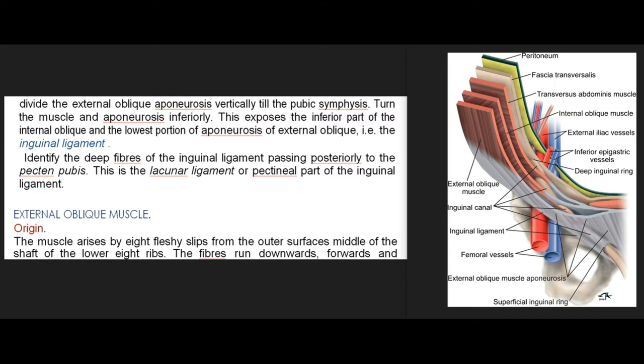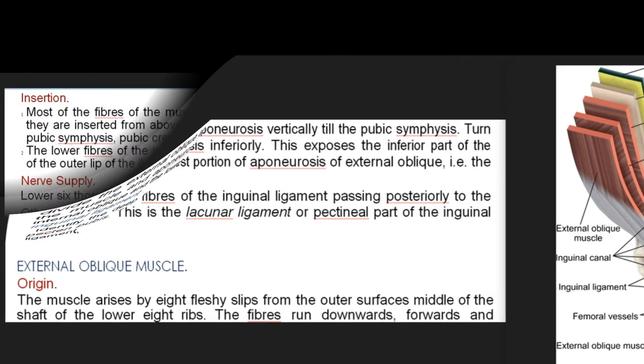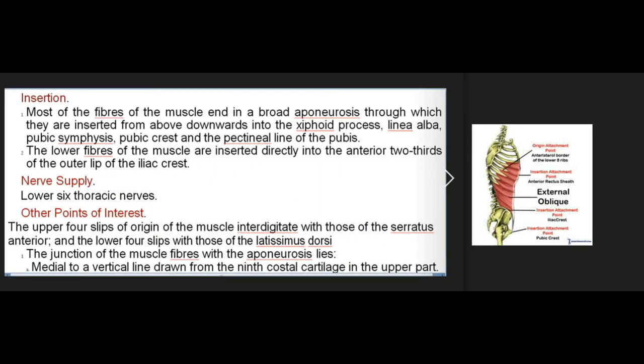External oblique muscle. Origin: the muscle arises by eight fleshy slips from the outer surfaces and middle of the shaft of the lower eight ribs. The fibers run downwards, forwards, and medially. Insertion: most of the fibers end in a broad aponeurosis through which they are inserted into the xiphoid process, linea alba, pubic symphysis, pubic crest, and the pectineal line of the pubis. The lower fibers of the muscle are inserted directly into the anterior two-thirds of the outer lip of the iliac crest. Nerve supply: lower sixth thoracic nerves.